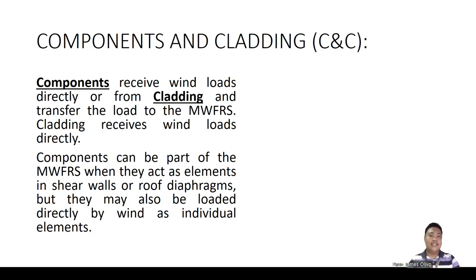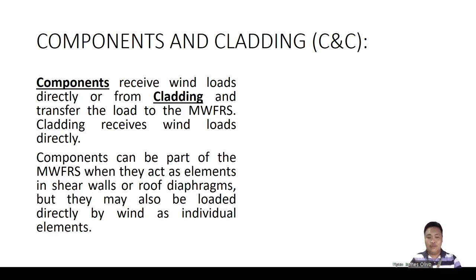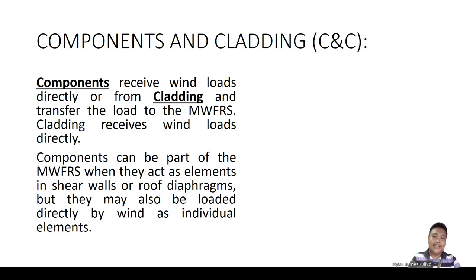Components and Cladding, or C&C, is divided into two parts: components and cladding. Components receive wind loads directly from cladding, while cladding is the one that really receives the loading first. In short, cladding receives the wind pressure and then transfers that force into the components.